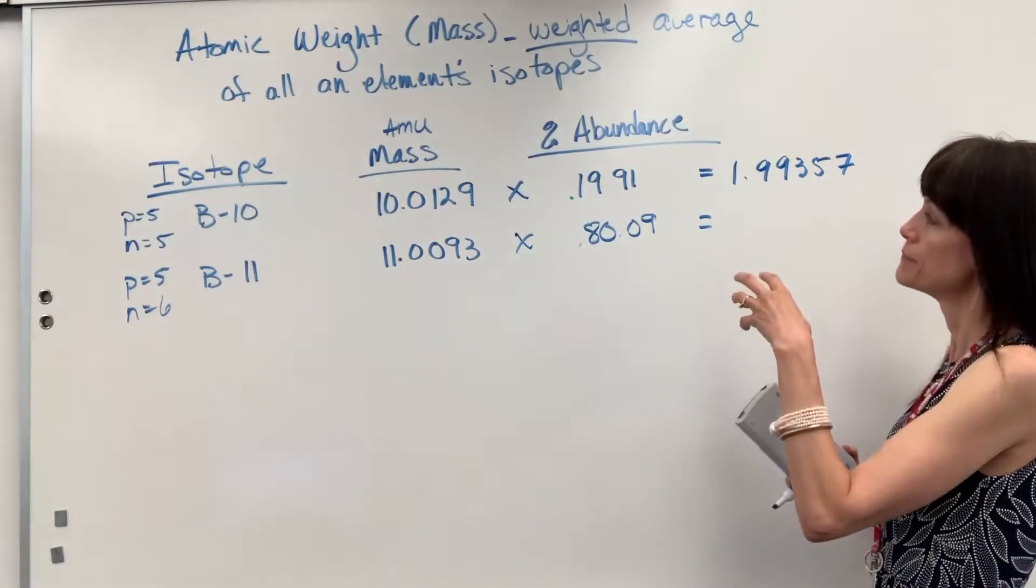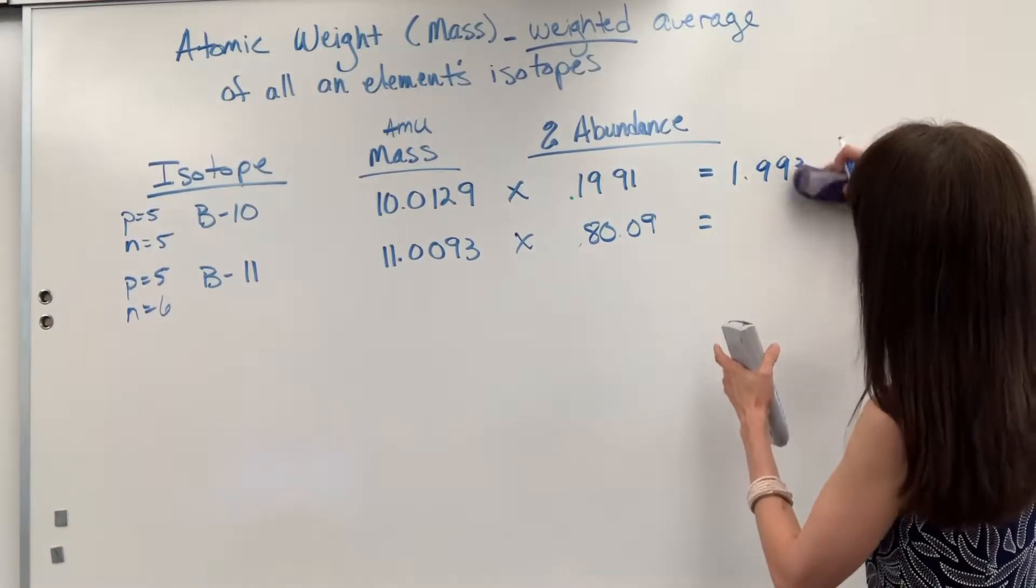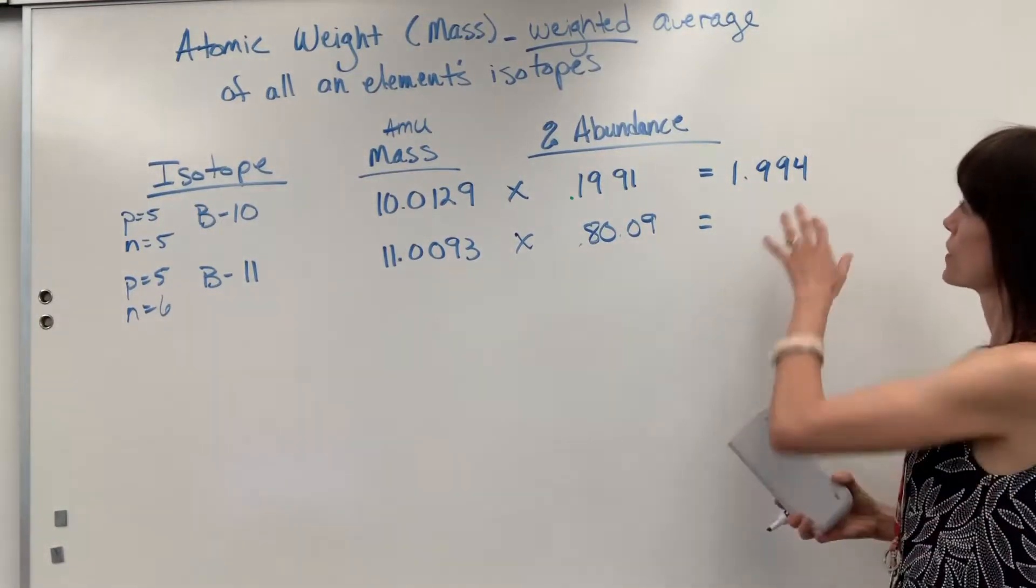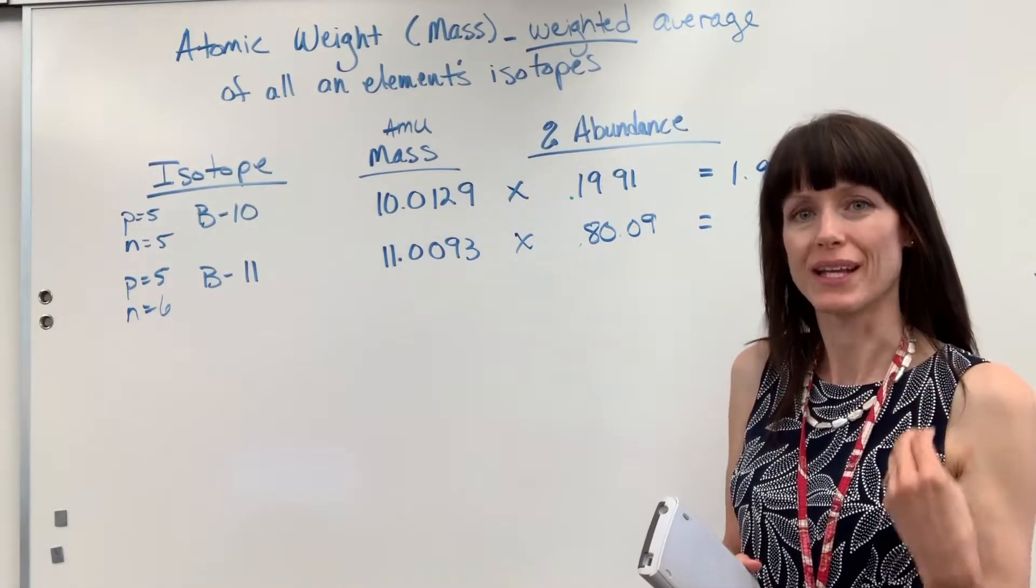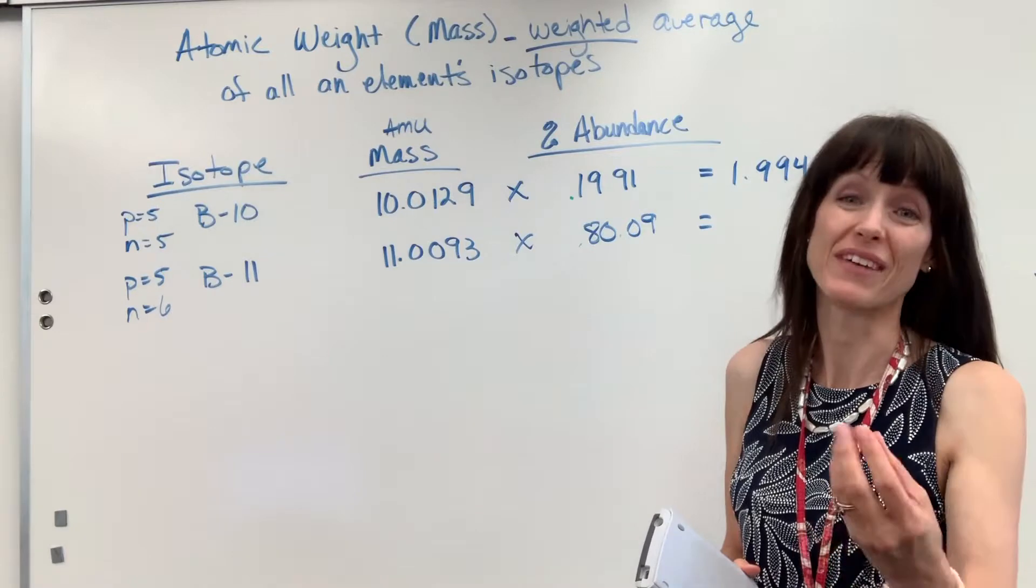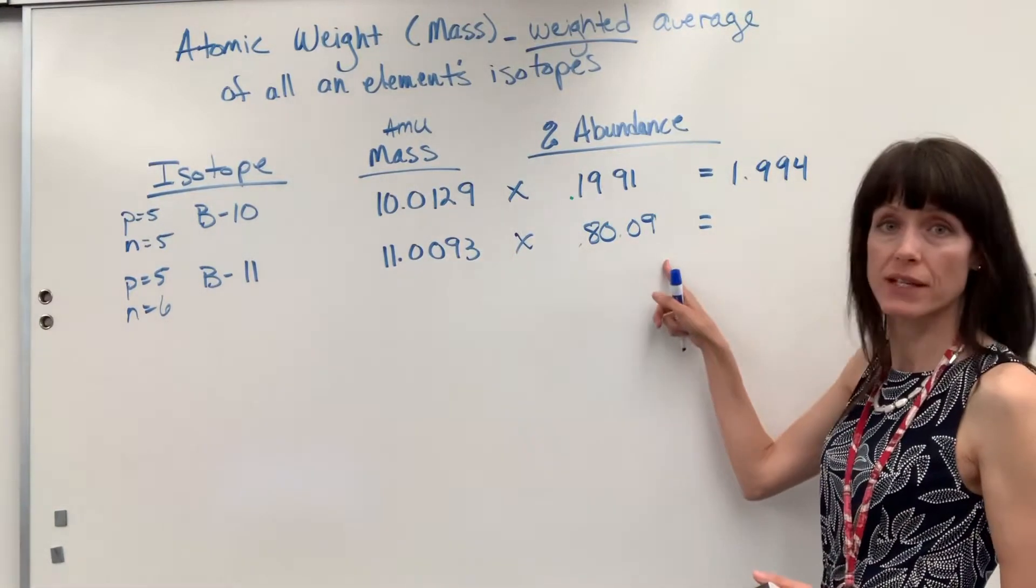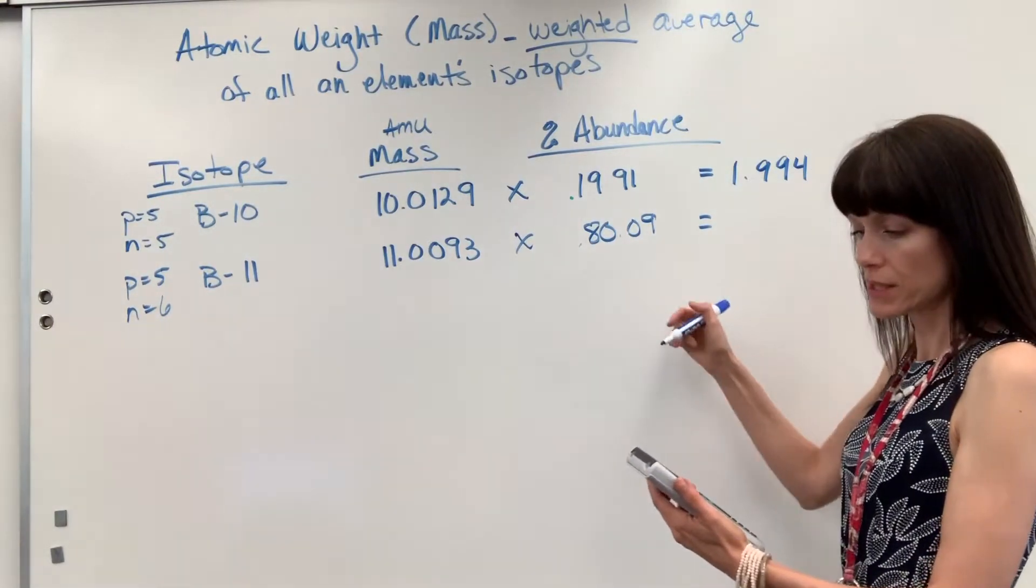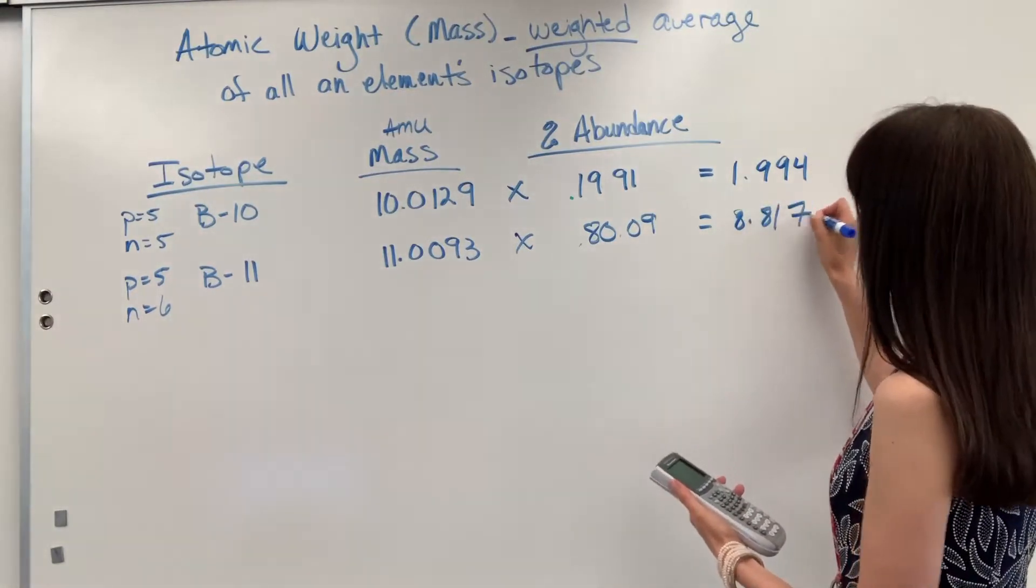We'll do the four sig figs because when you change operations, you have to truncate before you do the next operation. And we're going to have to add, we're changing operations. Here again, I've got six sig figs, four sig figs. So I'm going to truncate this at four sig figs. When I multiply these two together, we get 8.817.